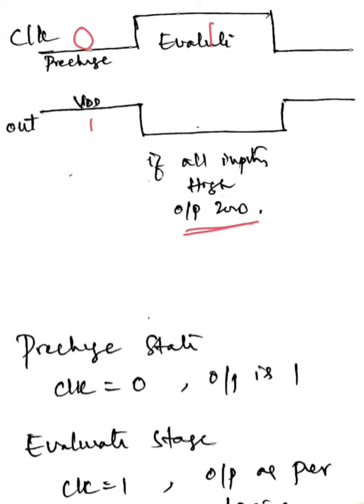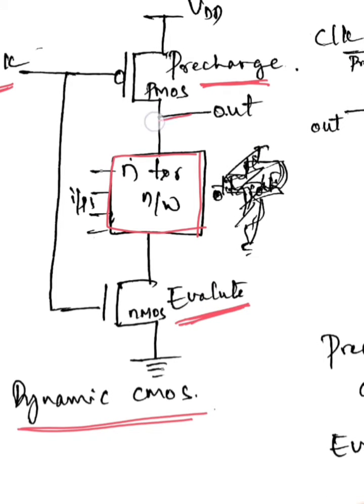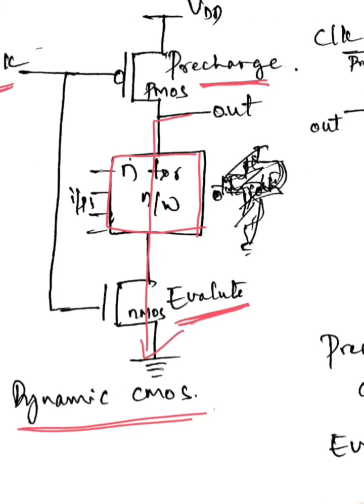If any path reaches to the ground in the pull-down network, the output will reach 0. There will be a chance of getting 0 output only in the evaluate state. In the precharge state, output will be 1.